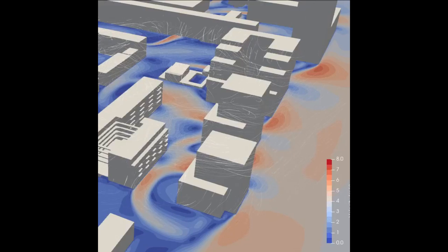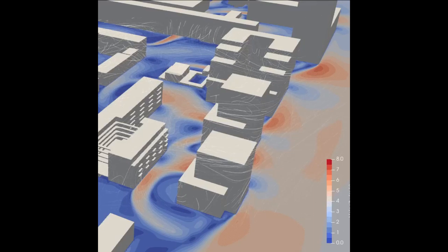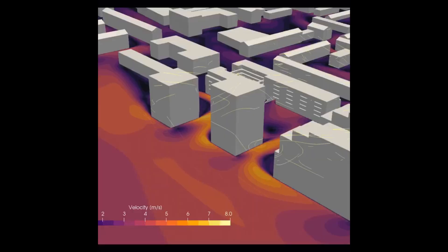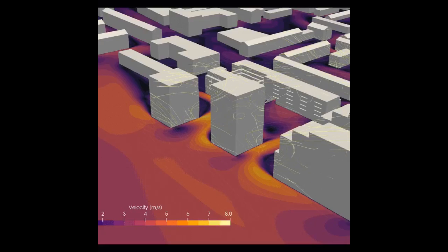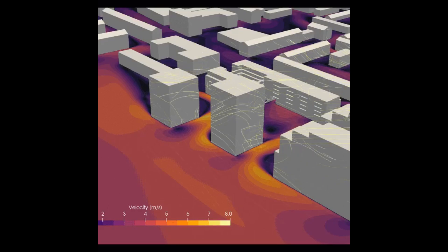Its building physics suite analyzes sun exposure, shadows, wind, CO2 emissions, daylight, energy performance, and internal comfort. OMRT's data-driven approach enables faster decision-making, sustainability insights, and optimized real estate solutions, empowering architects and developers to design smarter, faster, and more efficiently.